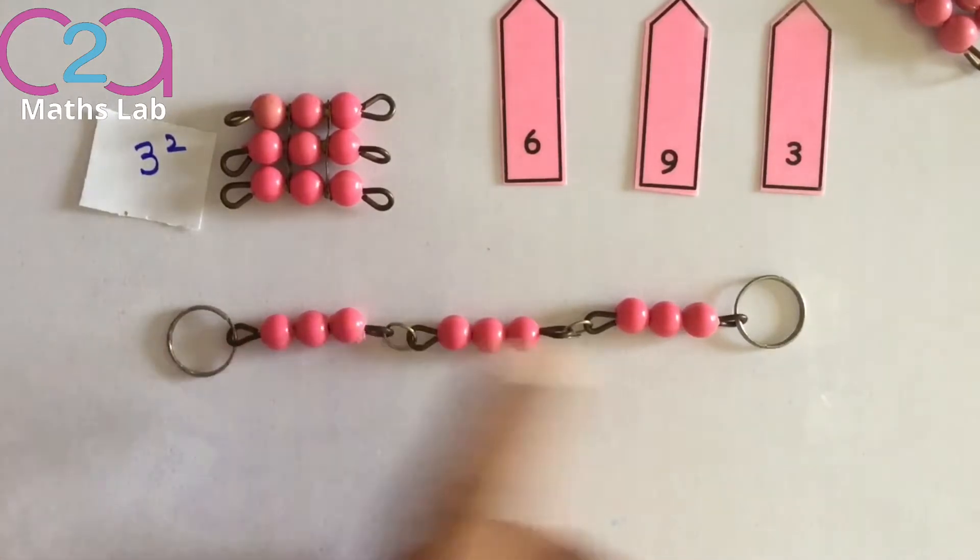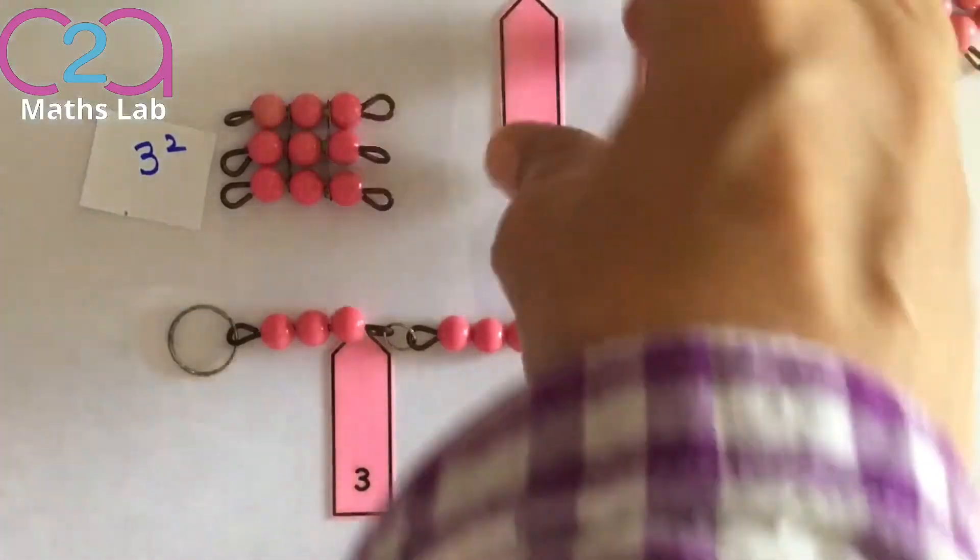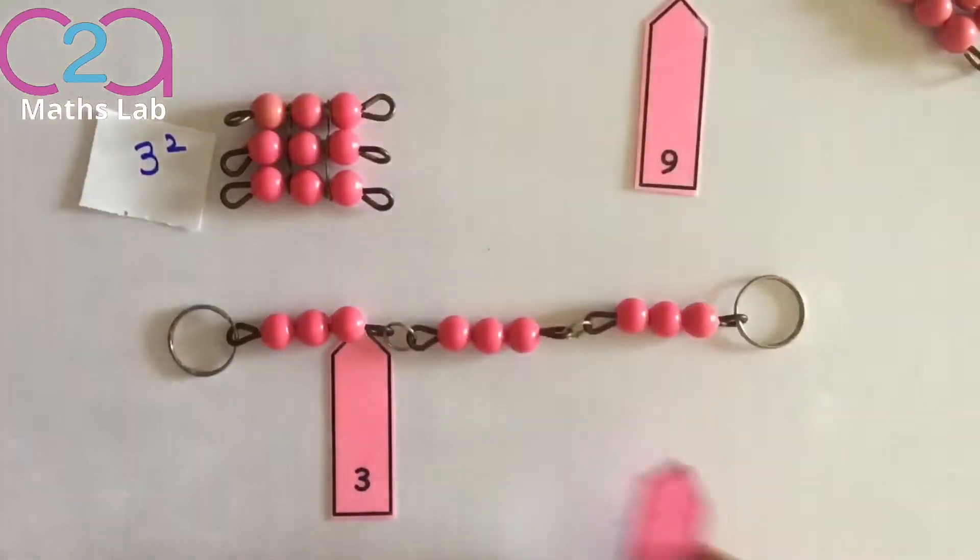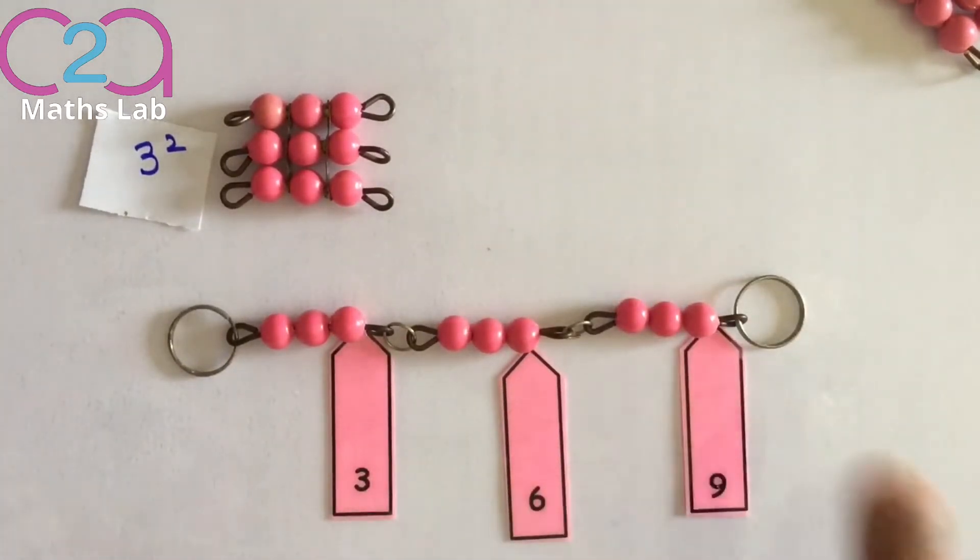1, 2, 3, 4, 5, 6, 7, 8, 9. So in a square, there are 9 beads.